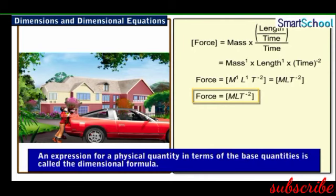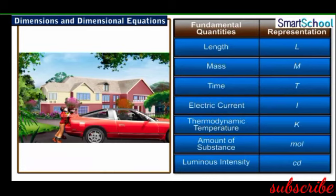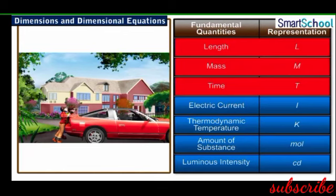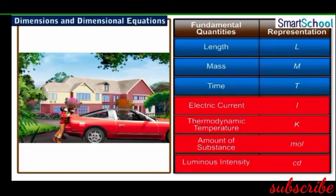Such an expression for a physical quantity in terms of its base quantities is called its dimensional formula. An equation which equates the quantity with its dimensional formula is called the dimensional equation. Of the seven base quantities in the SI system, only three — mass, length, and time — exist in the dimensional formula for force. Thus, the dimensions of all the other four base quantities in the expression for force are equal to zero.